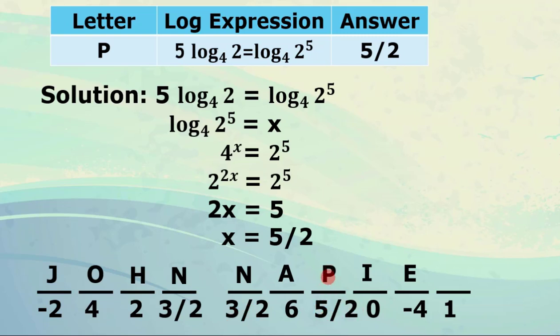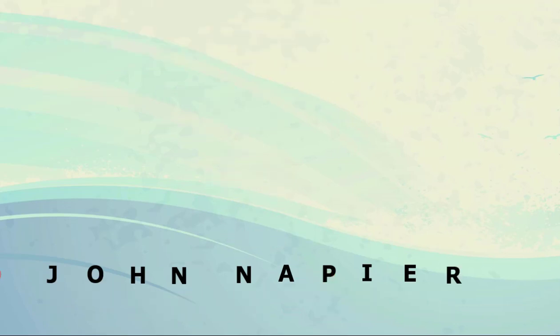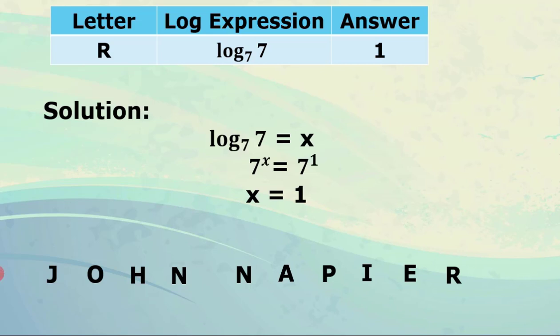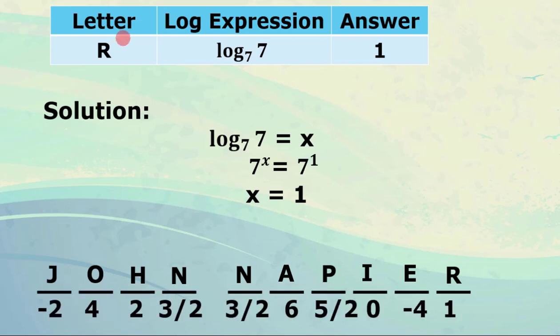For the last letter, log of 7 to the base 7. Obviously the answer is 1. In the solution: log of 7 to the base 7 equals x, so 7 raised to x equals 7 raised to 1, meaning x equals 1. The number 1 corresponds to letter R. So the mathematician who invented and introduced logarithms to ease the burden of computing very large numbers is John Napier.